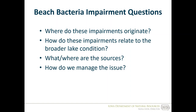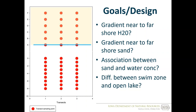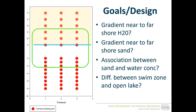At the onset of data collection for this larger project, we started with these basic questions: Where do the impairments originate from? How do these impairments relate to the broader lake condition? What or where are some of the sources coming from? And how might we think about managing these issues that we identify? For our study and monitoring design, we looked at whether we could identify any gradients in condition with bacteria concentrations in both the terrestrial zone in the sand, as well as in the water moving out from the swimming zone and into the open lake, and whether we saw associations between these two zones.